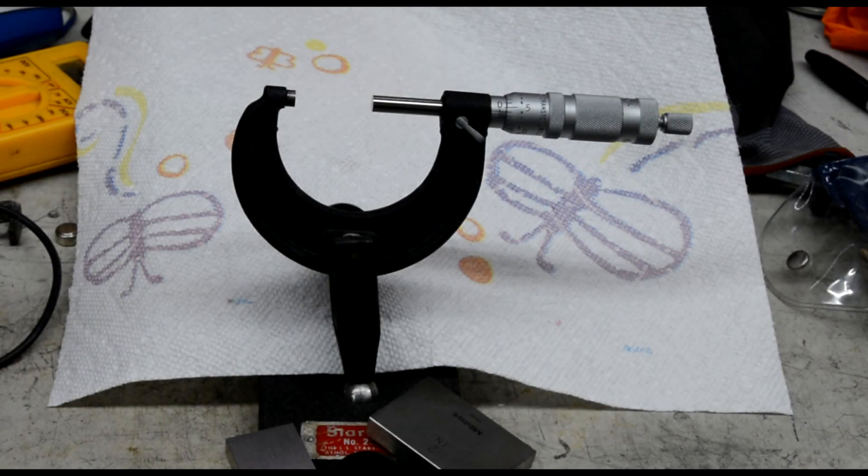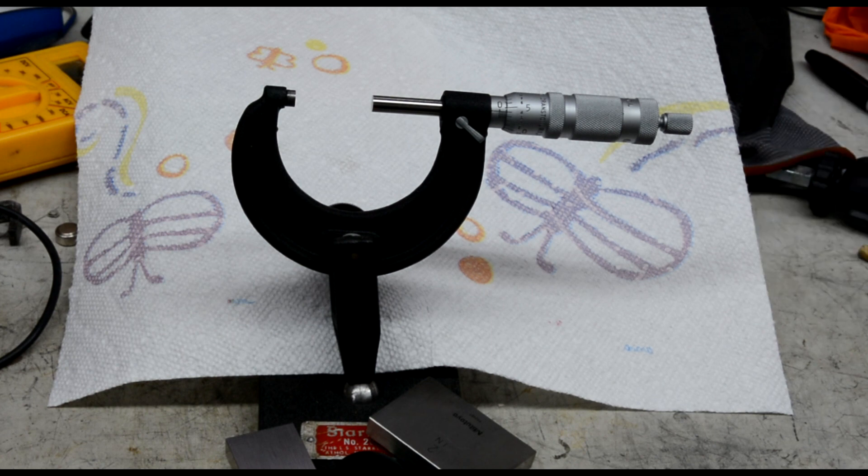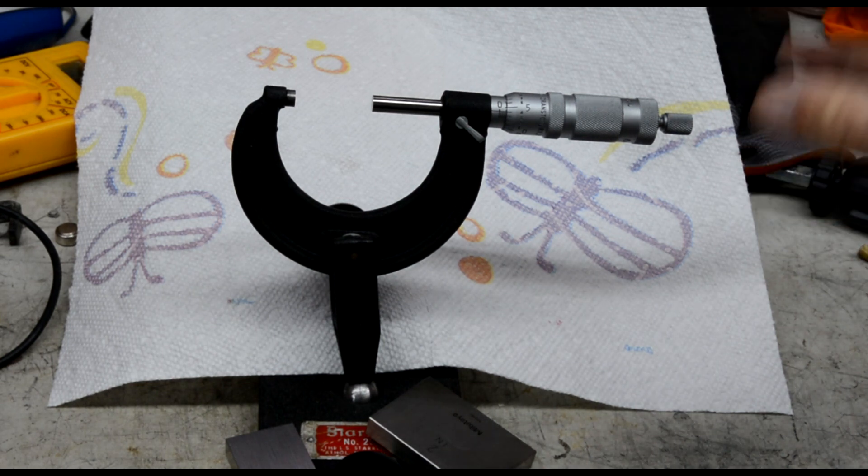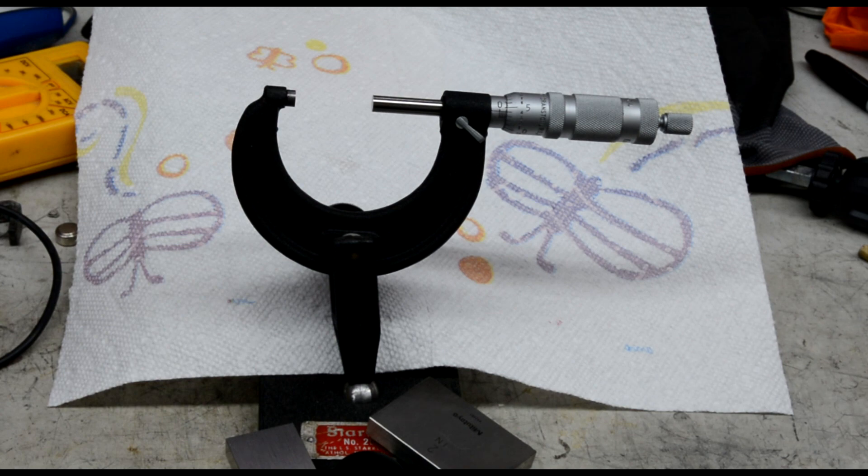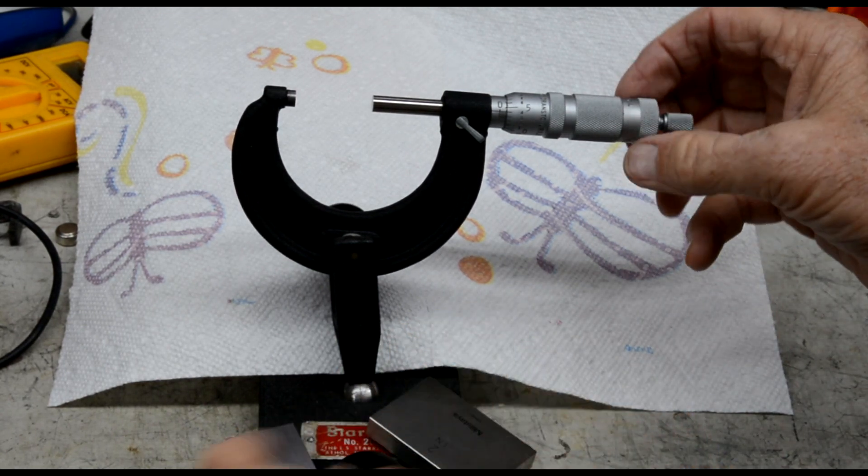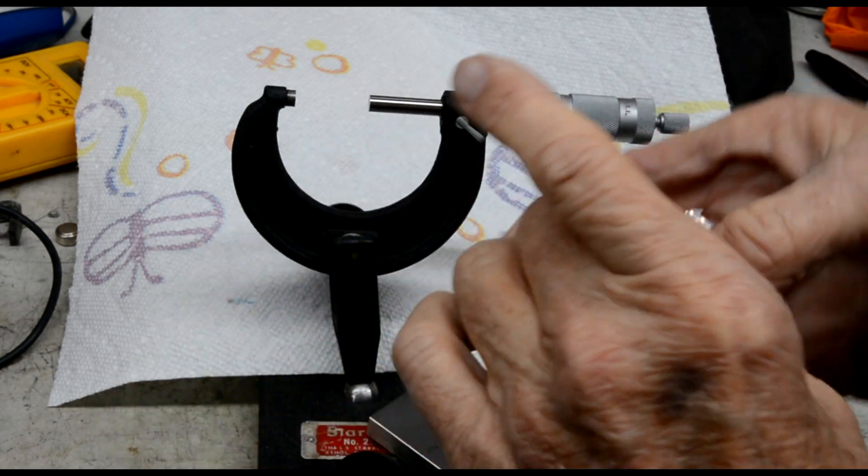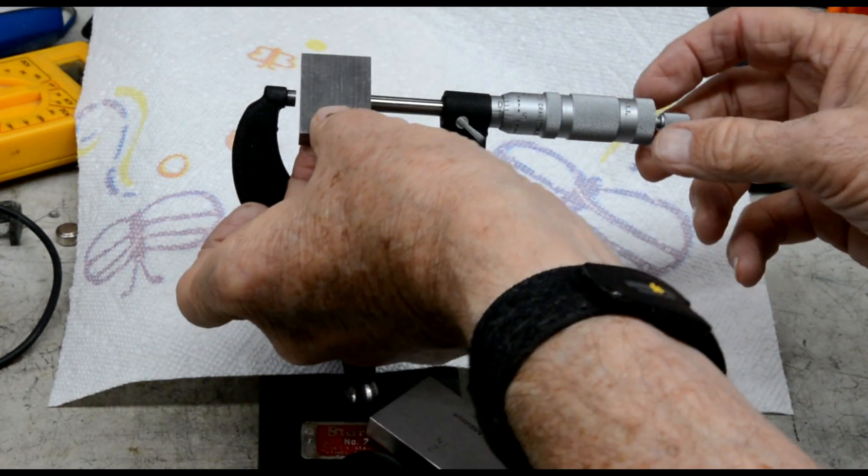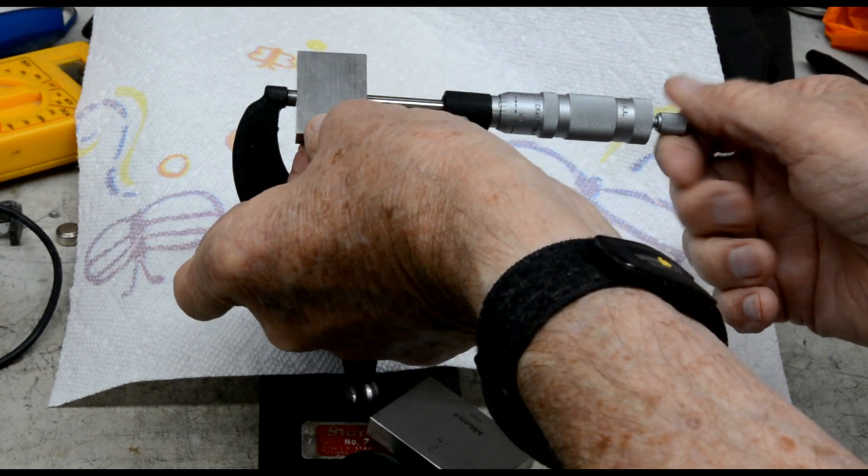This is the procedure for calibrating or adjusting the calibration of a central tool micrometer. This particular brand does it really cheesy in my opinion. You'll need a gauge block or a reference surface in order to do this.